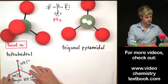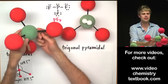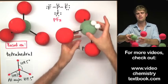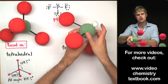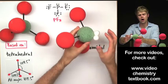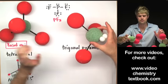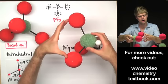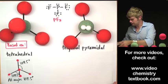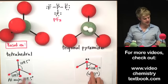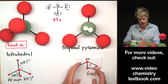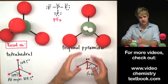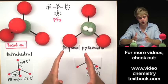In a tetrahedral molecule, the angle between every pair of bonds is 109.5 degrees. But when unshared electron pairs are present, they push a little harder against the atoms because they need more space. So in the trigonal pyramidal shape, all the atoms get pushed together and the bond angle is smaller than 109.5 — more like 107 degrees. It's similar to tetrahedral, just compressed a bit by those unshared electrons.